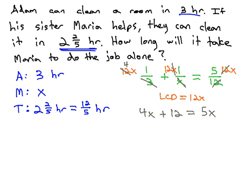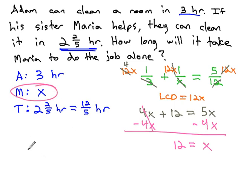Now, we can continue solving this equation. Move the variable to one side by subtracting 4x off of both, and we find out 12 is equal to x, which is Maria's time. It takes Maria 12 hours to complete the job.